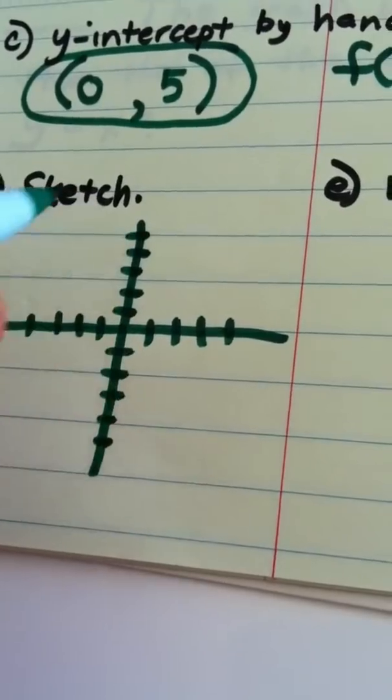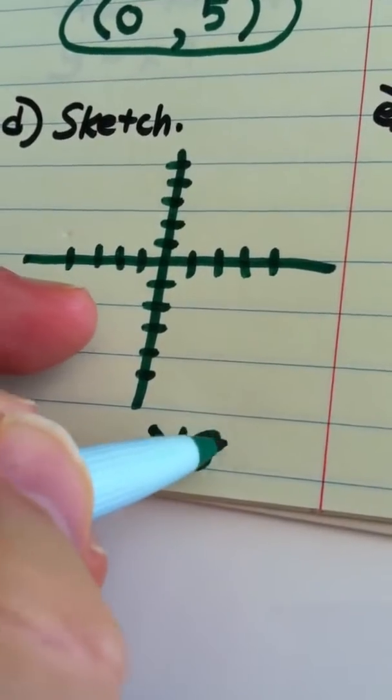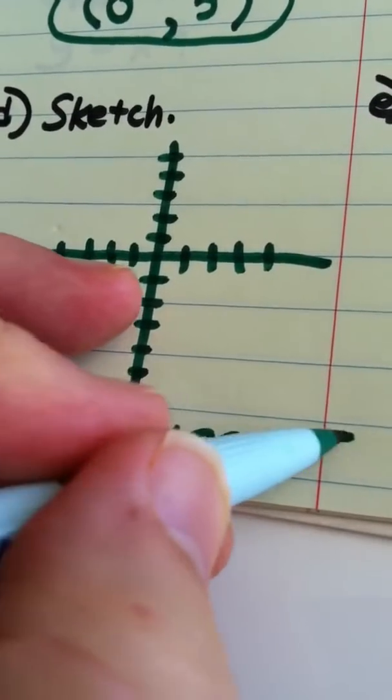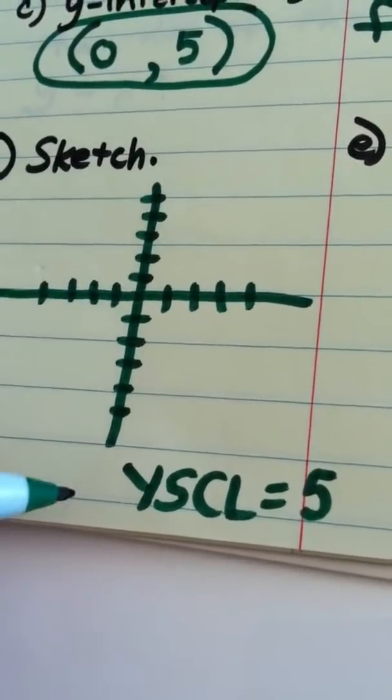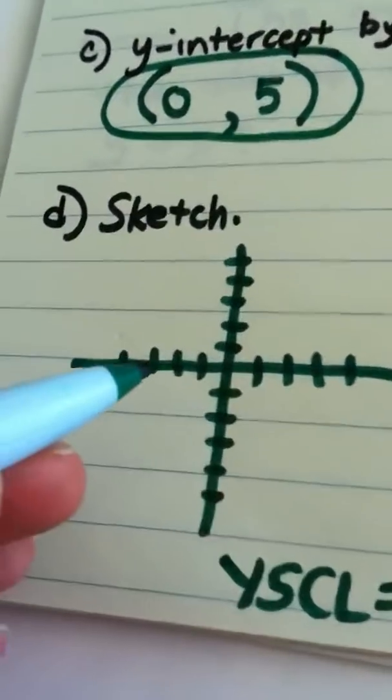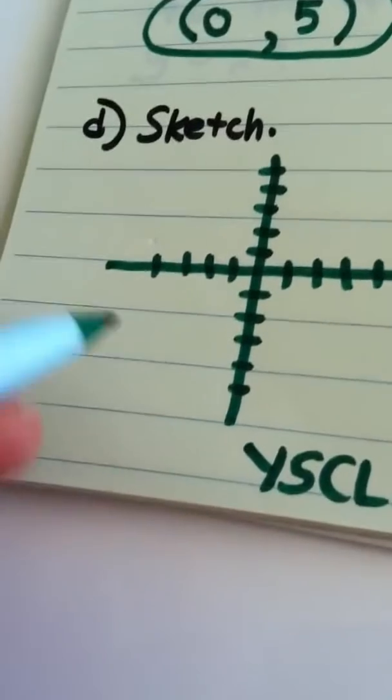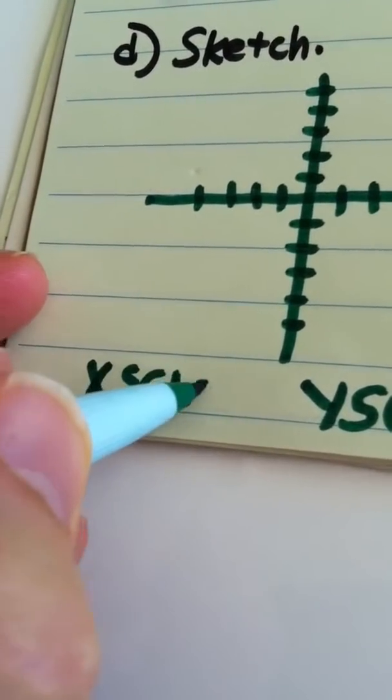But what I'm going to do here is I'm going to change my y-scale. Let's go by like 5s. So let the y-scale equal 5. So what that means is every tick mark on the y-axis is really going to be 5 units. So negative 4, 21, I'm going to let the x-scale alone, x-scale is not going to change, that's just going to be 1.